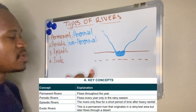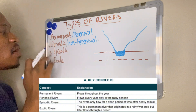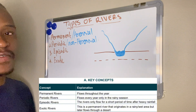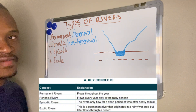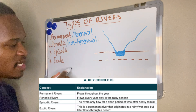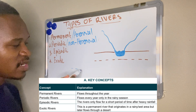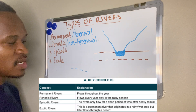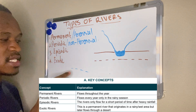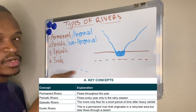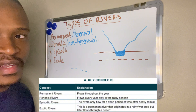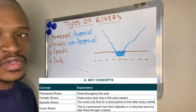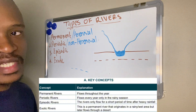Number two, we have our periodic river, also known as the non-perennial river. This one is shown as a broken line on our map. It represents a river which flows seasonally — it only flows during rainy seasons.